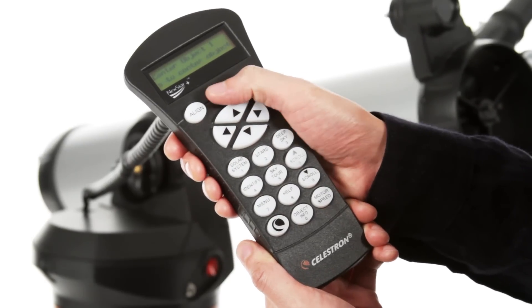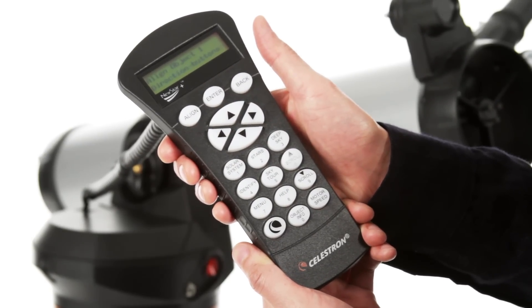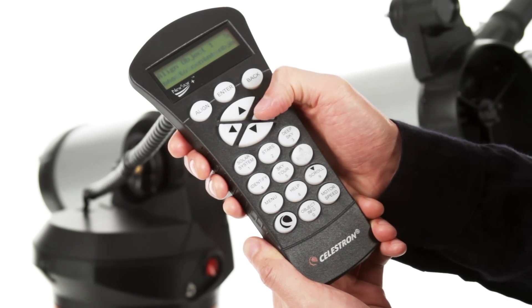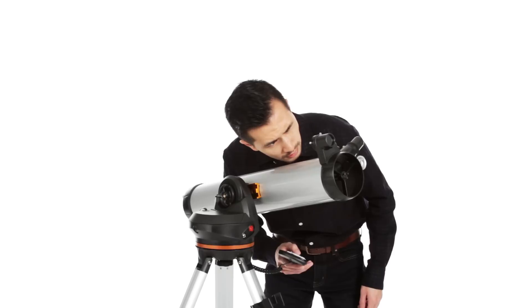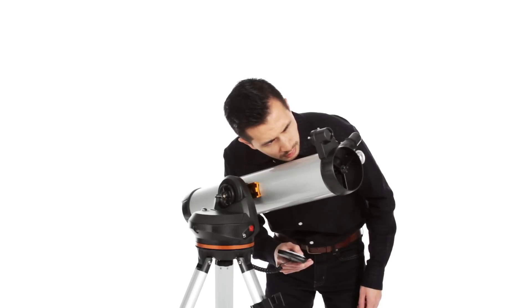Getting started is easy thanks to our proprietary SkyAlign procedure. Use the directional buttons to center any three celestial objects in the eyepiece, and your LCM is aligned and ready to locate and identify objects for you.